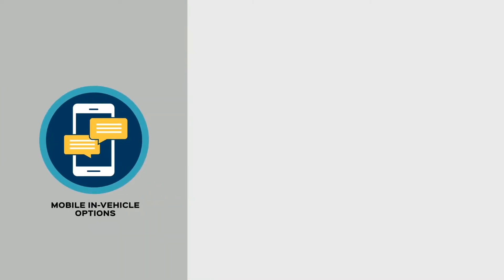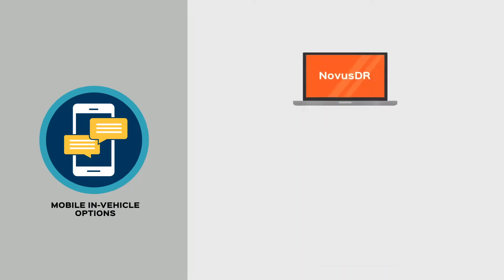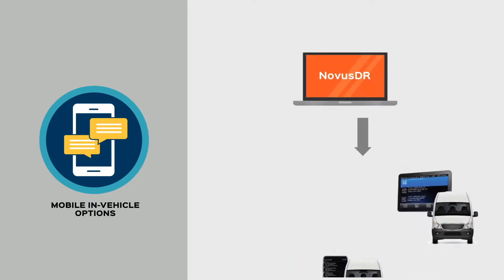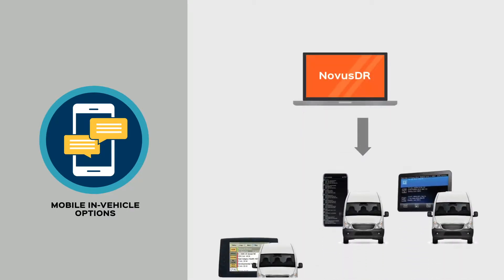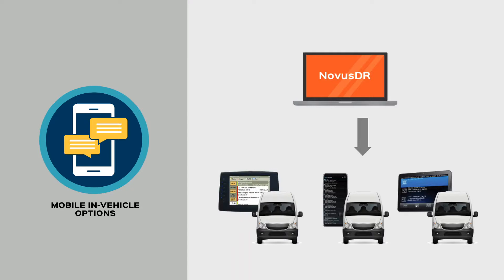Mobile in-vehicle options. A choice of in-vehicle hardware enables the automatic display and collection of vehicle location data. Drivers can view electronic manifests and receive trip updates in real-time.